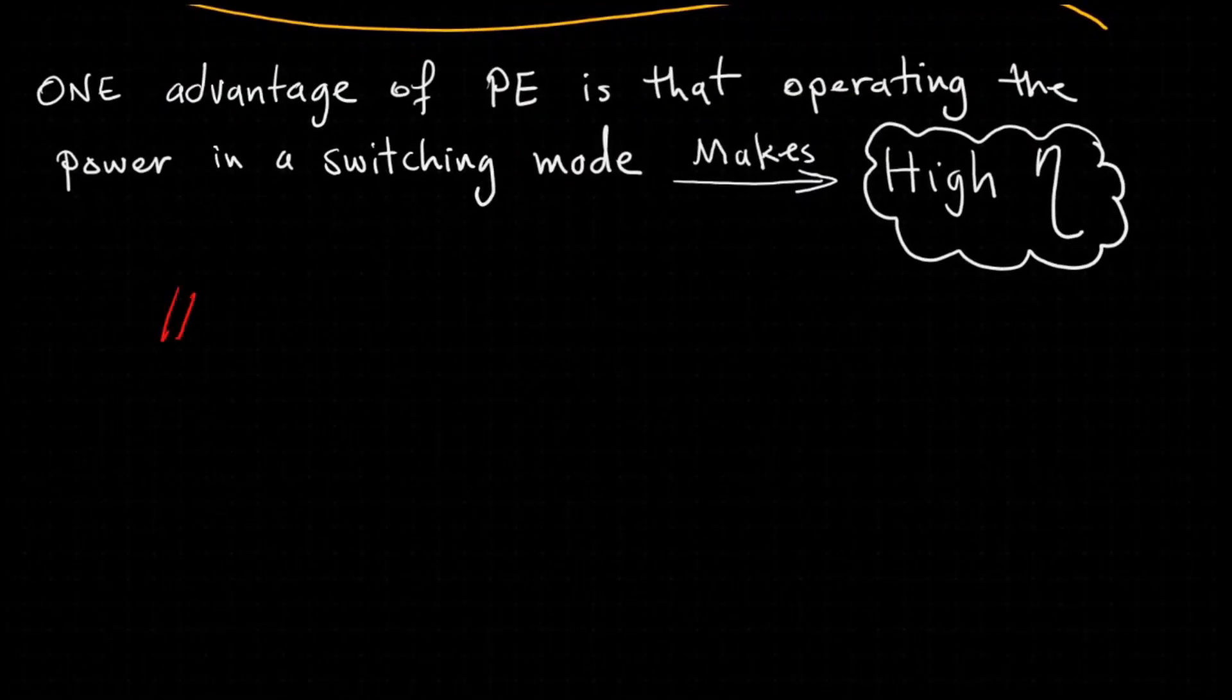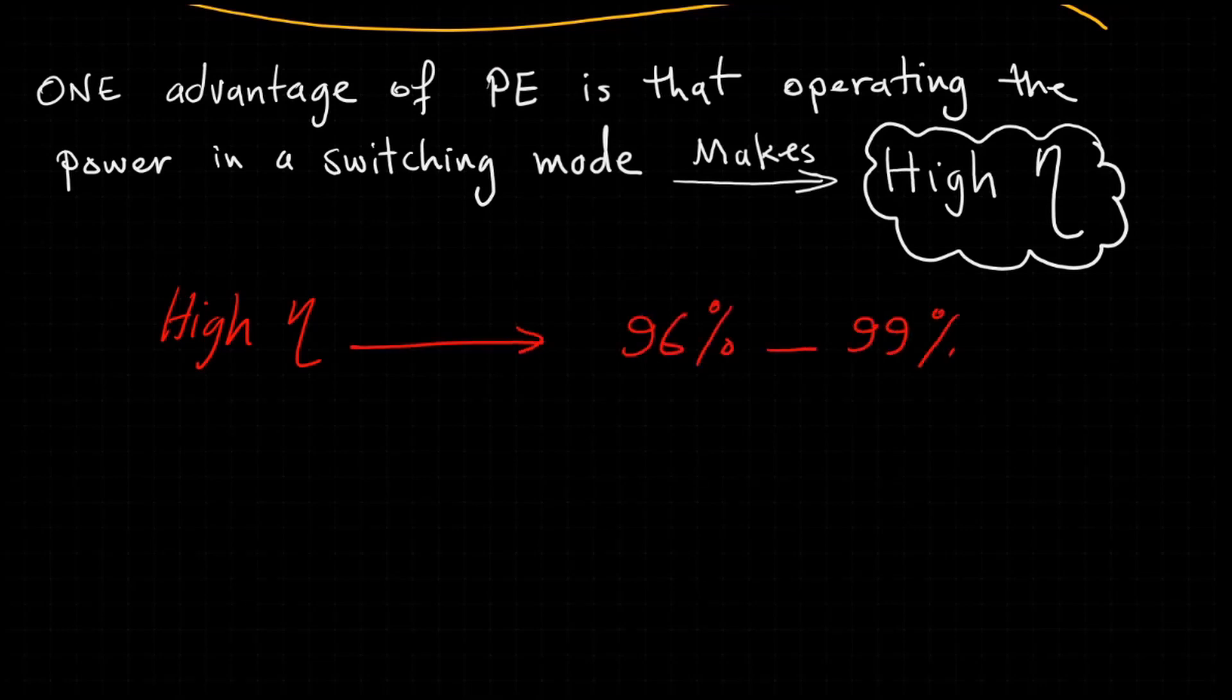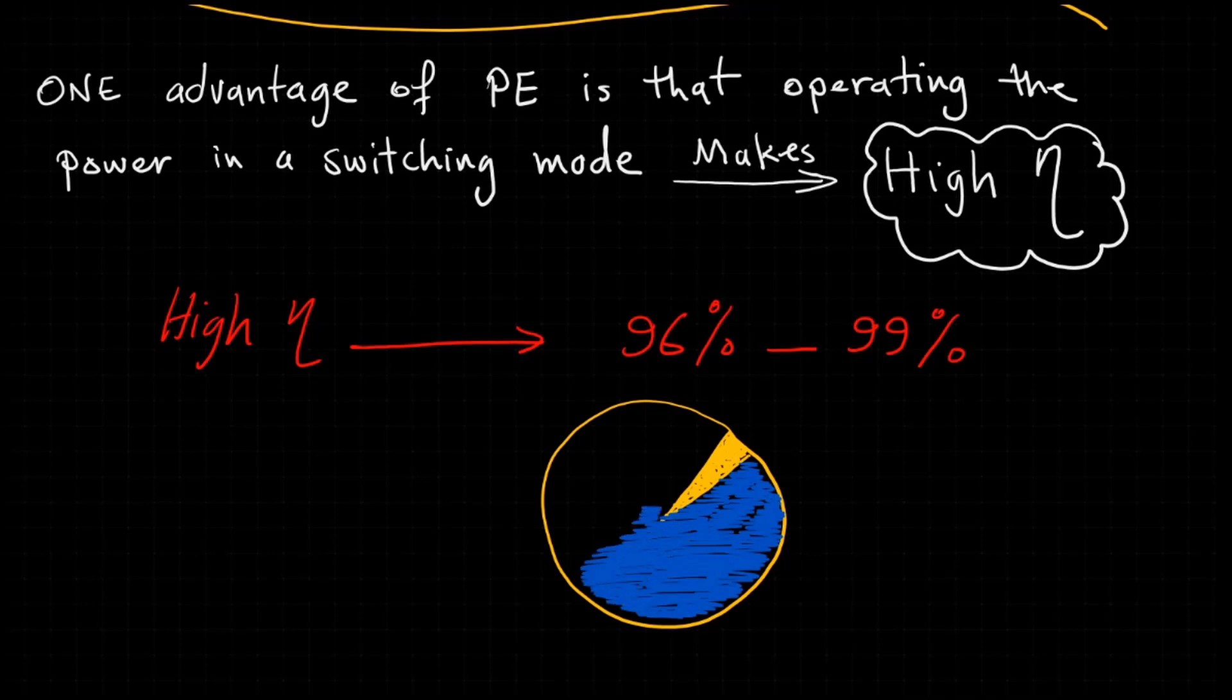This efficiency can be something from 96 to 99 percent. This makes 1 to 4 percent losses only.